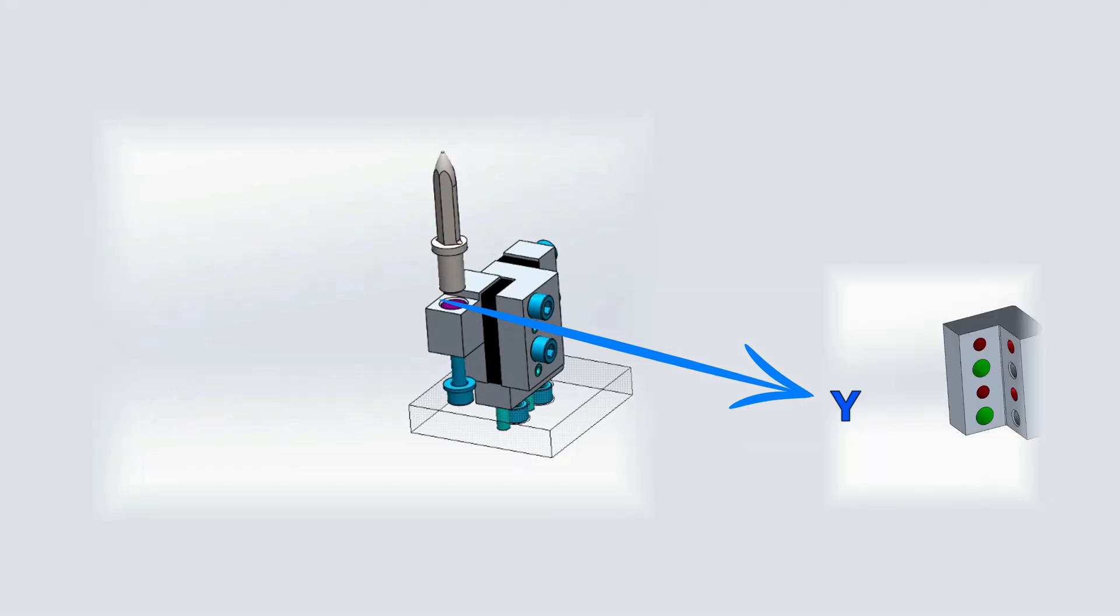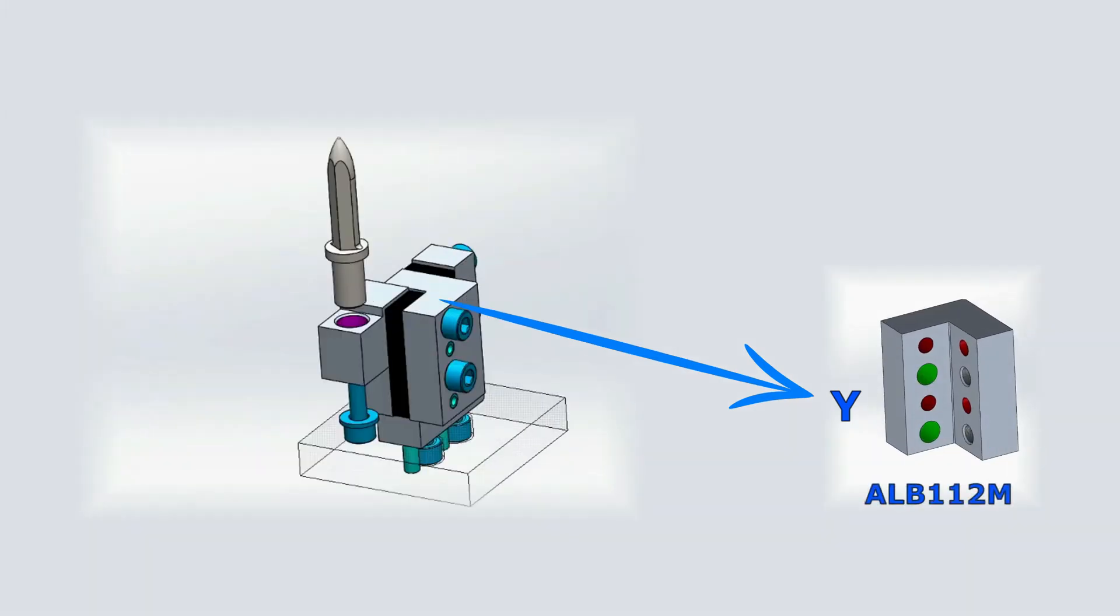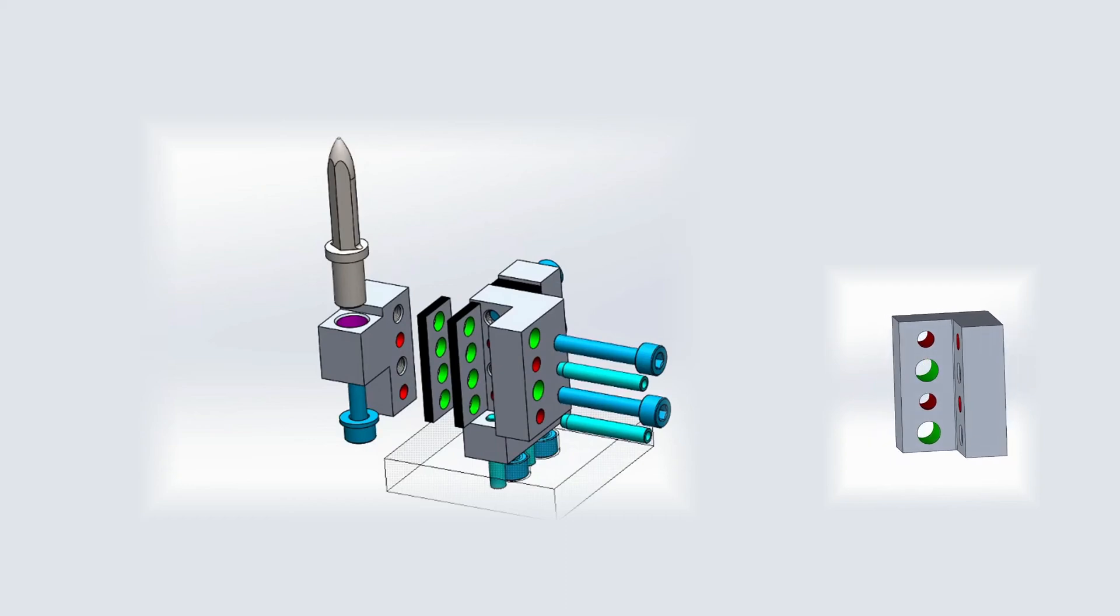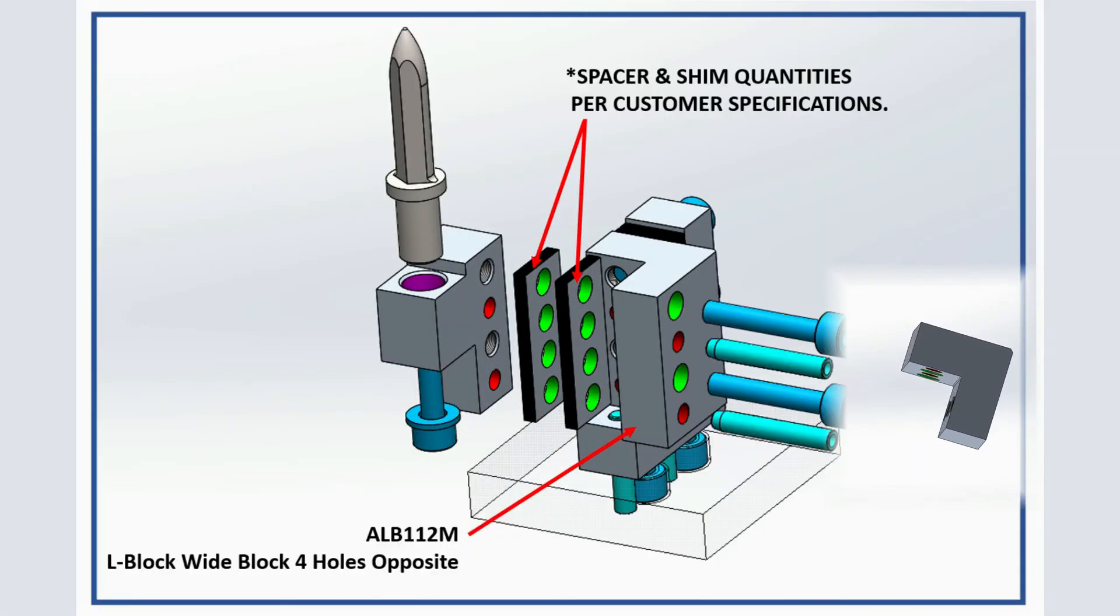Y adjustable directions. For the Y direction, apply one spacer and one shim kit, as well as L-block wide block 4 holes, ALB-112M, and fasteners: 2 socket head cap screws and 2 pull dowel pins.